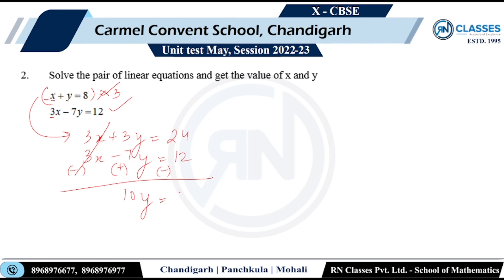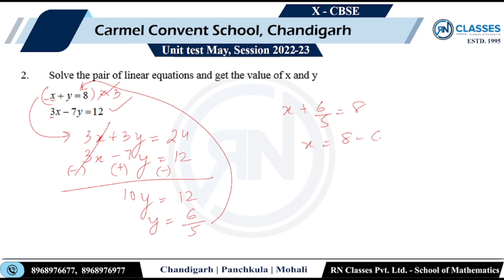Subtracting the equations cancels the x terms, leaving 10y = 12, so y = 6/5. Substituting back into the first equation: x + 6/5 = 8, so x = 40/5 − 6/5 = 34/5. Solution: x = 34/5 and y = 6/5.